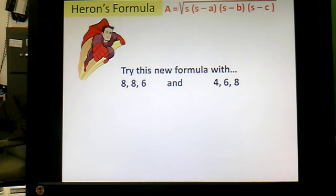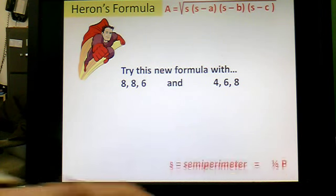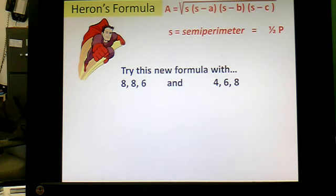S is something called a semi-perimeter. And most of you know what the prefix semi means. You know what a semi-circle is. Semi-circle is half of a circle. A semi-perimeter is half of the perimeter. So, you find the perimeter. You calculate the perimeter. You divide it by two.